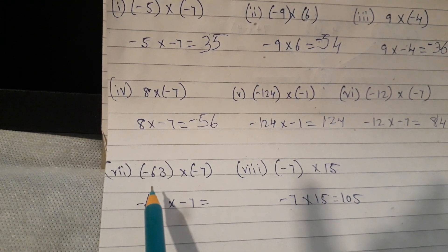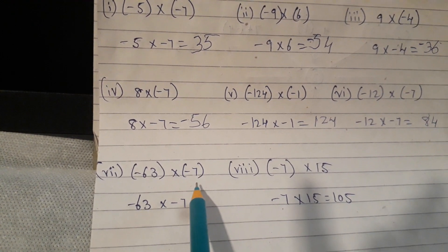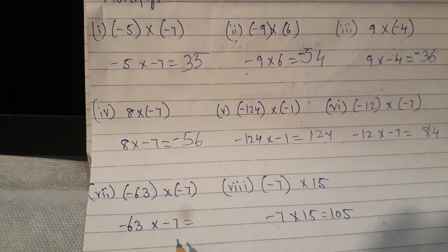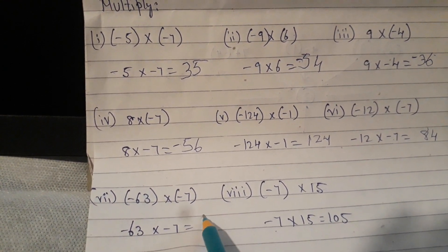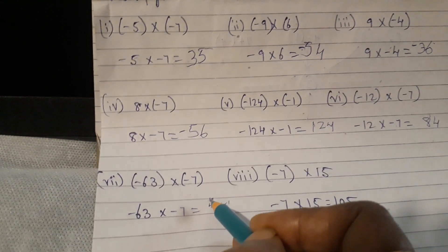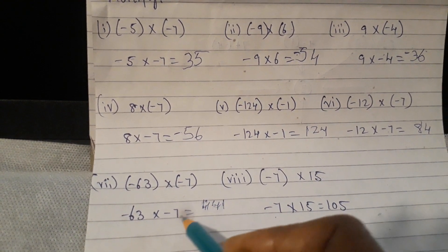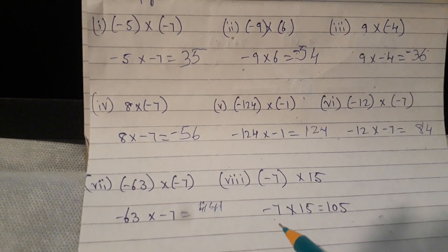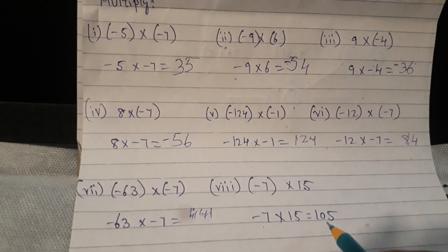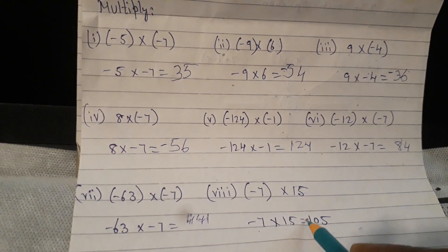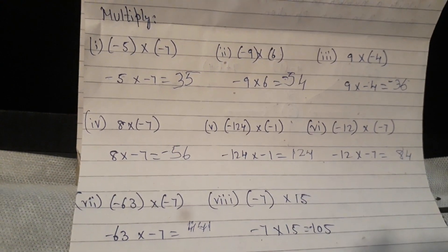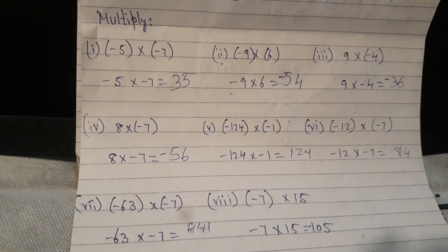7th one, minus 63 into minus 7. That's a big number. You could multiply in your working column and find out what's the answer. Minus 63 into minus 7 will give me 441. Minus into minus is plus. Minus 7 into 50 will give me how much? 105. And plus into minus, minus. So here we have applied all the three rules, whether it is plus into plus or plus into minus or minus into plus and minus into minus.